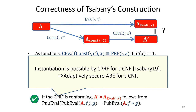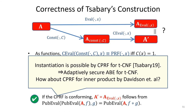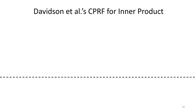Combining the framework with the CPRF, she obtained the first adaptively secure ABE for the same predicates from lattices. In our case, we want to have an ABE for inner products. A natural approach is to use the recent construction of adaptively secure CPRF for inner product by Davidsson et al. to instantiate the framework. The approach works if their construction has conforming property. However, as I mentioned, Davidsson et al.'s CPRF does not have conforming property. Let me explain their construction.